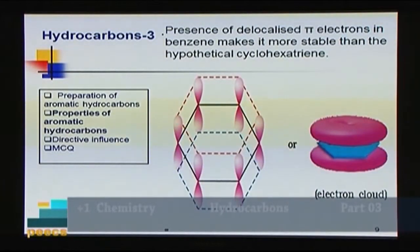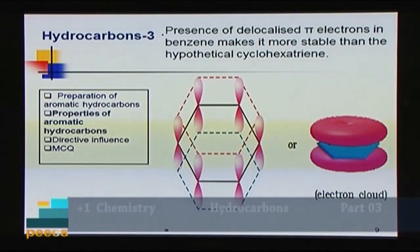The delocalized pi electron cloud in benzene attracts electrophiles, which are electron-deficient or positively charged reagents. The benzene ring attracts electrophiles, but the carbon-carbon double bonds are not ordinary double bonds — they are delocalized pi electrons — so benzene normally does not undergo addition reactions. Therefore, most reactions of benzene are electrophilic substitution reactions, where hydrogen is replaced by electrophiles.